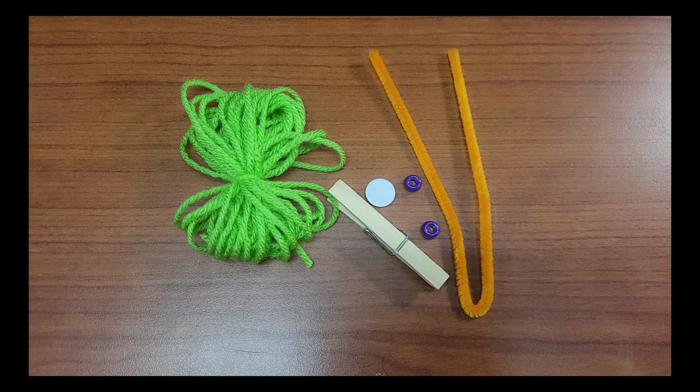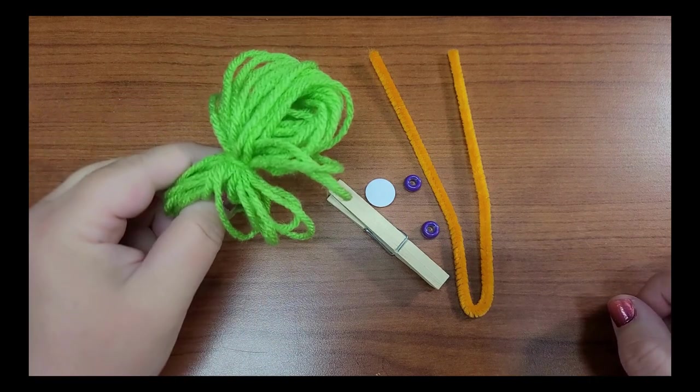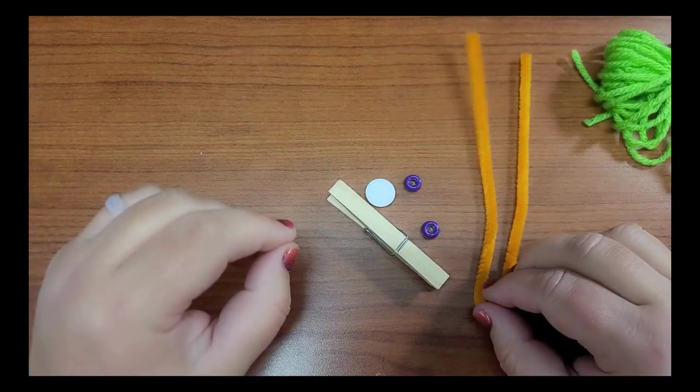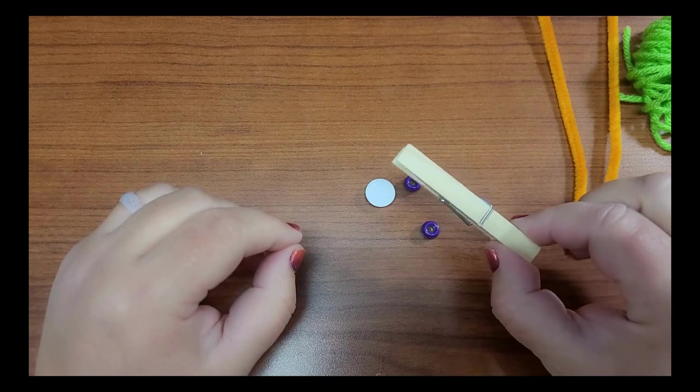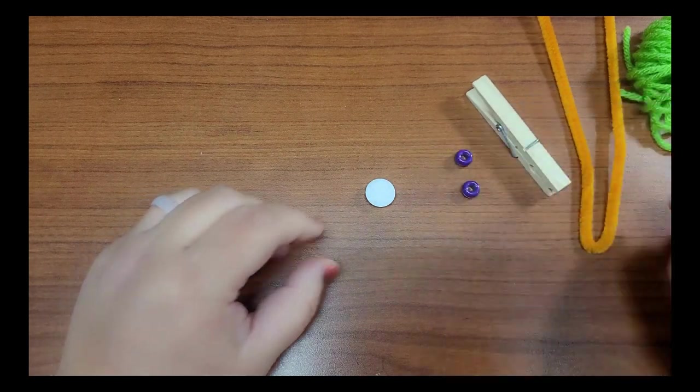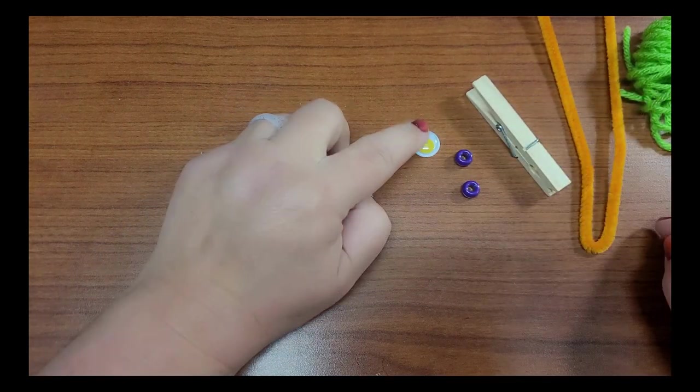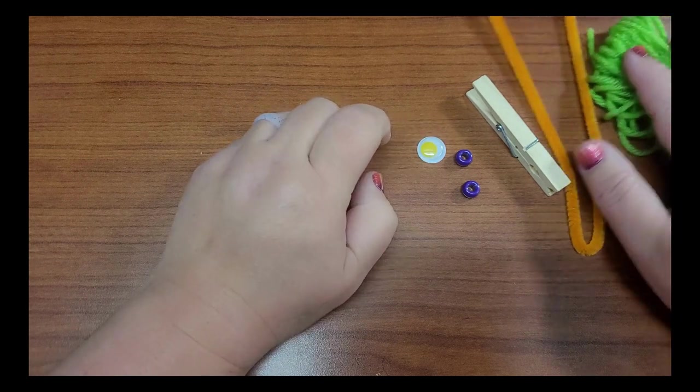So I have opened up my kit and this is what is inside. You're going to have some yarn, a pipe cleaner, a clothespin, two pony beads, and either one or two googly eyes depending on how big they are.